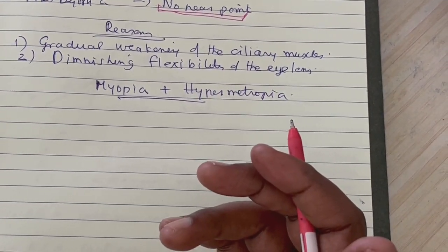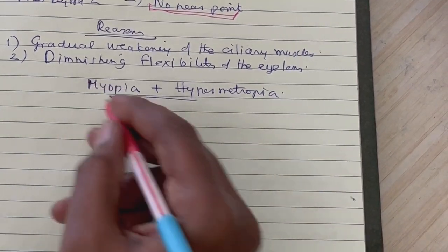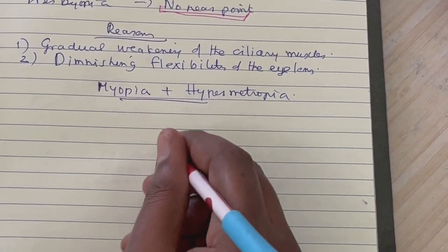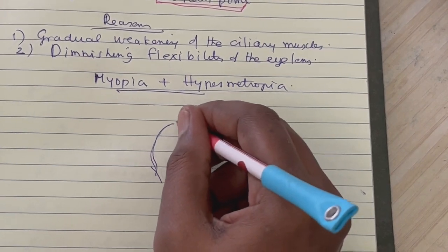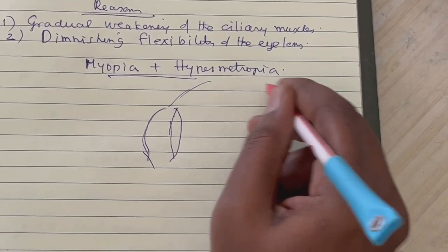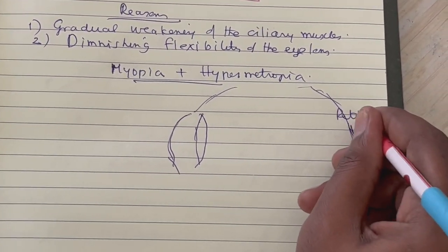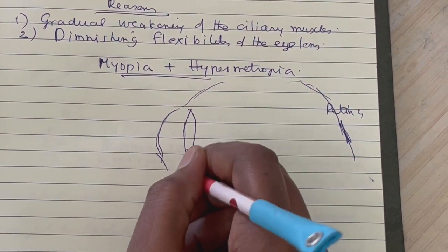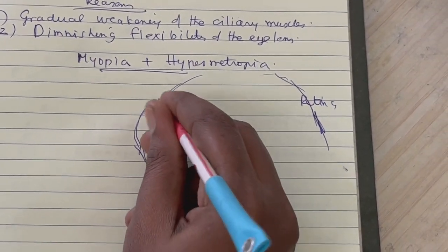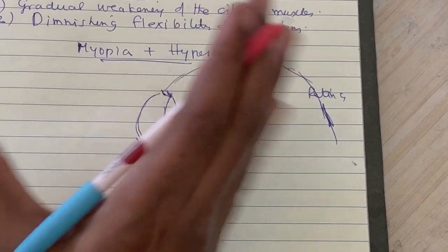So this is the eye and you have the lens. Somewhere here you have the retina. Suppose this person is affected by both these conditions - myopia and hypermetropia.